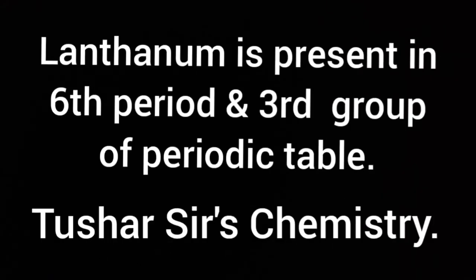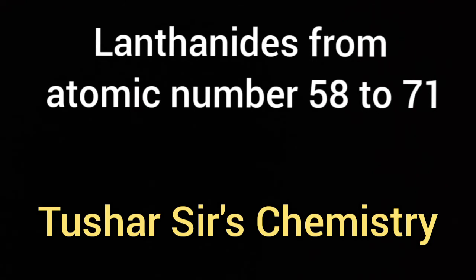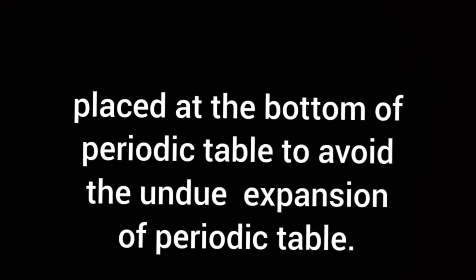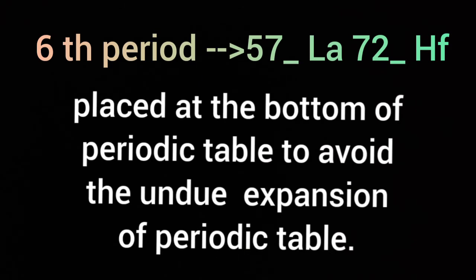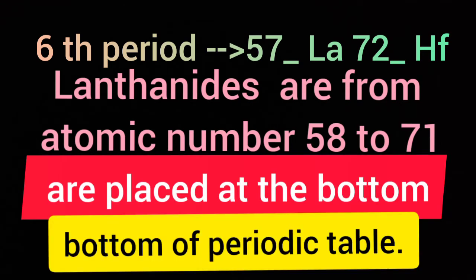Lanthanum is present in the 6th period and 3rd group of the periodic table. Lanthanides from atomic number 58 to 71 are placed at the bottom of the periodic table to avoid the undue expansion of the table. After lanthanum, you will find hafnium, and the atomic number of hafnium is 72. So in between 57 and 72, you will find 14 elements from atomic number 58 to 71 placed at the bottom of the periodic table.